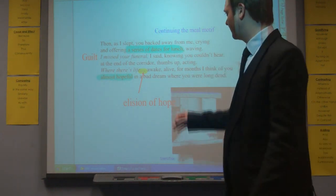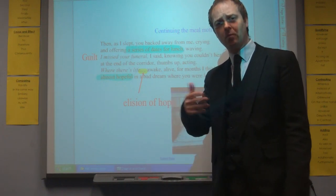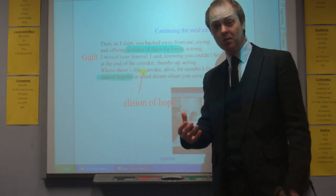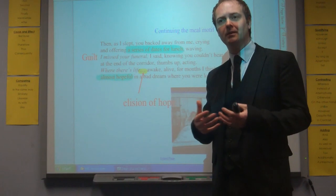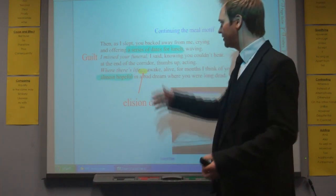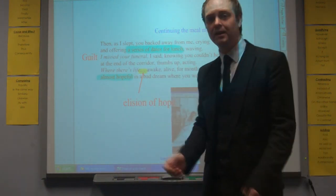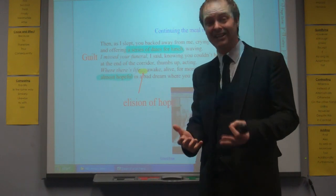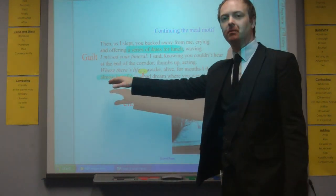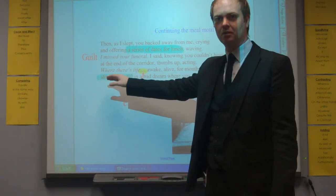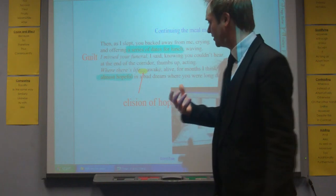Where there's life, and then we get this allusion. Where there's life collocates, where there's life there's hope. But there's hope is elided, it's removed, perhaps suggesting that hope is abandoned at this stage as well. Even this idiomatic phrase that's kind of throwaway, oh where there's life there's hope, is rejected. She can't bring herself to even articulate this because there is no hope. Awake, alive amongst I think of you, almost hopeful. Almost. Again there's this sense in which it's within reach but still hope is lost.